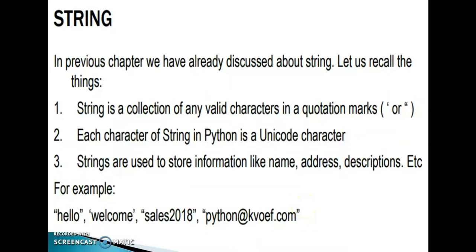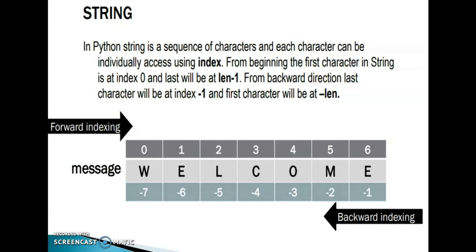Next, strings. In the previous chapter, we already discussed strings. A string is a collection of any valid characters in quotation marks, either single or double. Each character of a string in Python is a Unicode character. Strings are used to store information like name, address, descriptions, etc. Examples: 'hello', 'welcome', 'sales2018', 'python@kvoef.com', 'anu'.